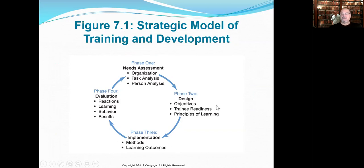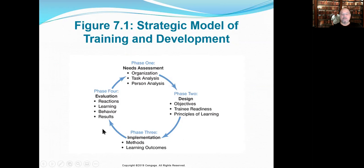Phase two: now let's design the training. What are our objectives? What kind of training readiness is there? We're looking at the intrinsic and extrinsic motivation of our employees and key people, and then the principles of learning. We're going to look at a learning wheel that shows some pretty interesting things about different aspects of learning, because not everybody learns exactly the same way. Phase three is implementation — what are we actually going to do, what methods will we use, and what outcomes are we looking for? Then we evaluate whether the training did the job we wanted, and then we go back into phase one again. This is a cyclical process.